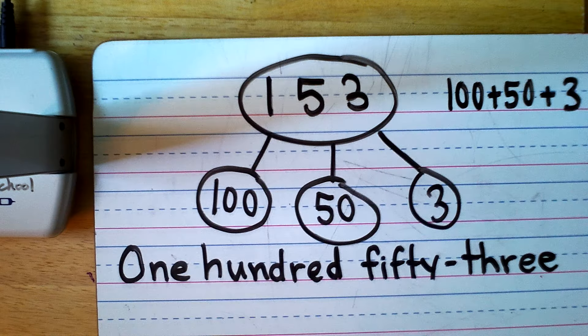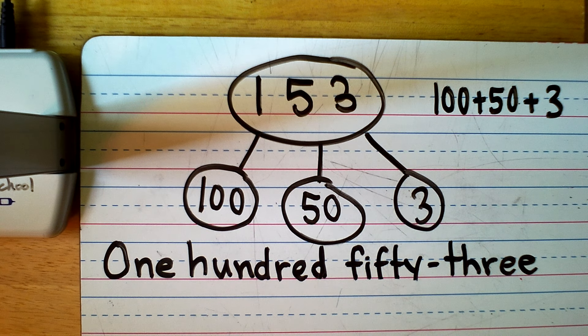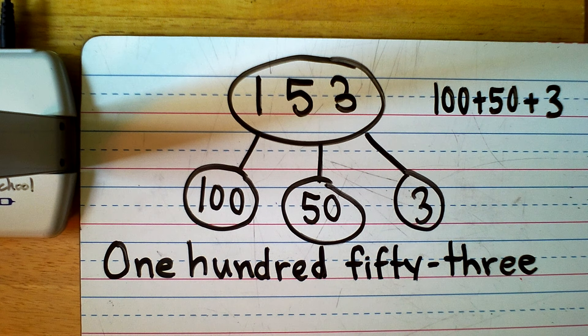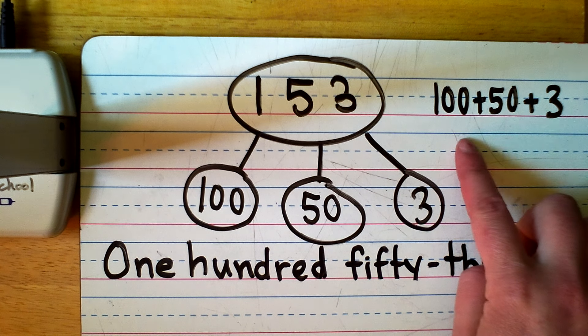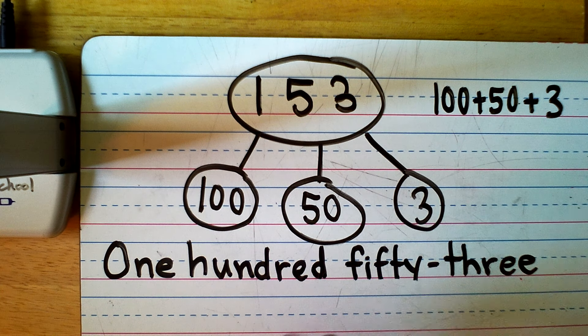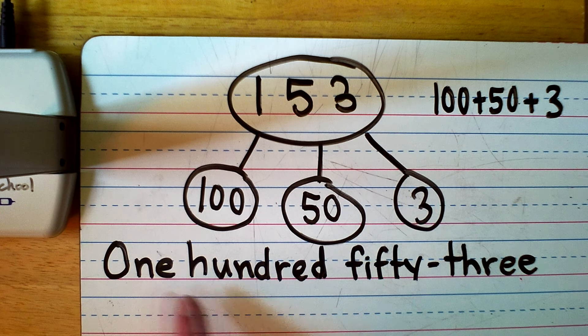Now to look at this number using a number bond, I have 153 in the top and I broke it into 100 plus 50 plus 3 for my expanded form. My standard form is 153, just the number. My word form is one hundred fifty-three.